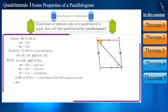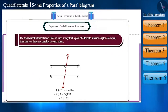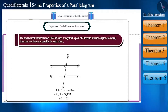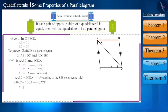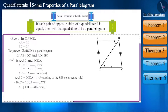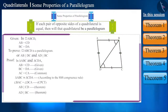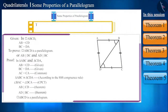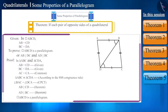Therefore, angle BAC and angle DCA will be equal, forming a pair of alternate angles. We know that if a transversal intersects two lines such that a pair of alternate interior angles are equal, then the two lines are parallel. This means side AB is parallel to side DC. By drawing diagonal BD, we can also prove side AD is parallel to side BC. Since both pairs of opposite sides are parallel, quadrilateral ABCD is a parallelogram. We can write this as a theorem: if each pair of opposite sides of a quadrilateral is equal, then it is a parallelogram.